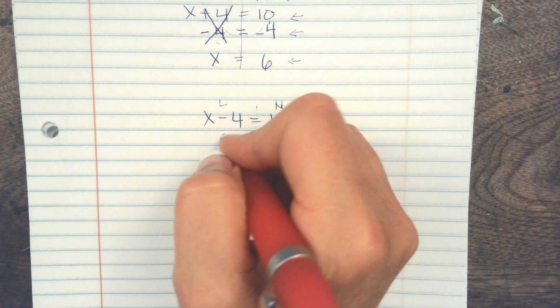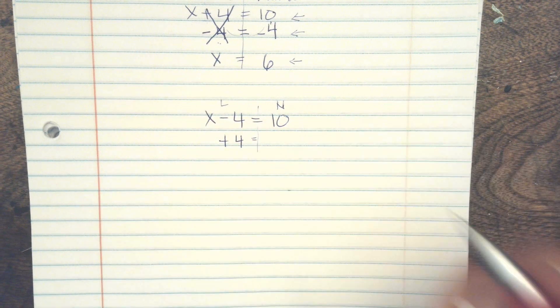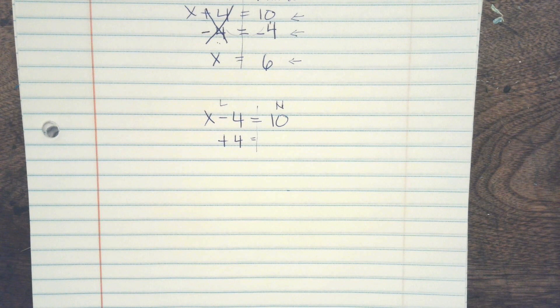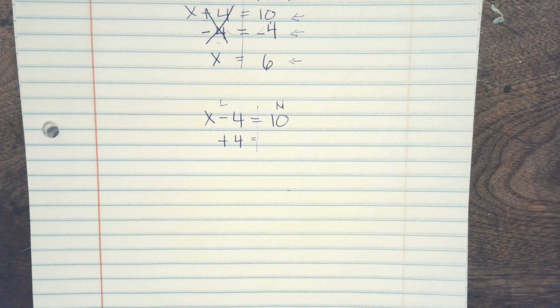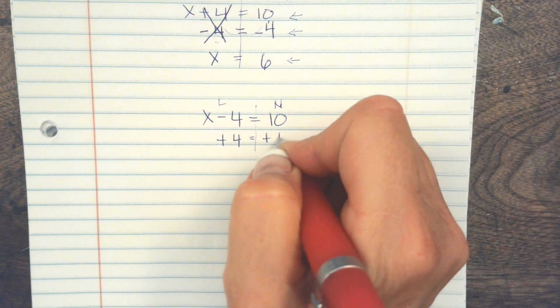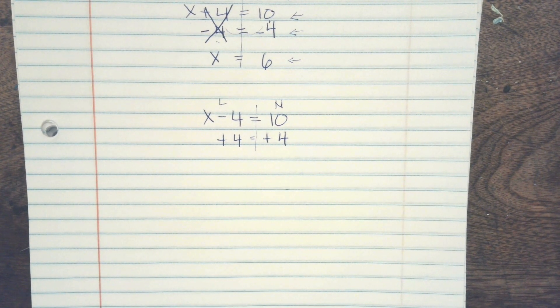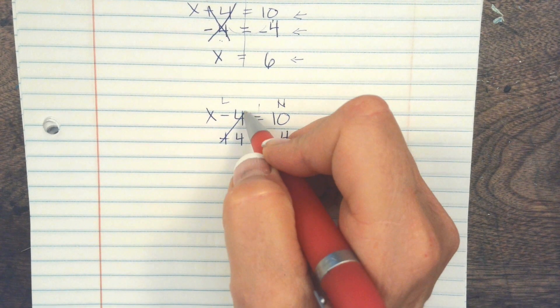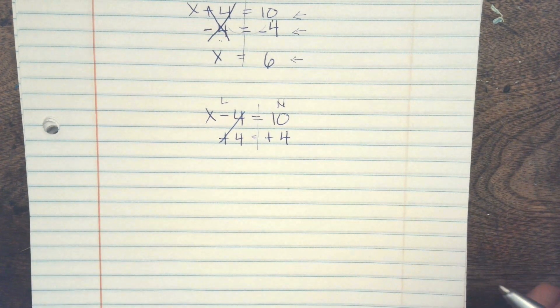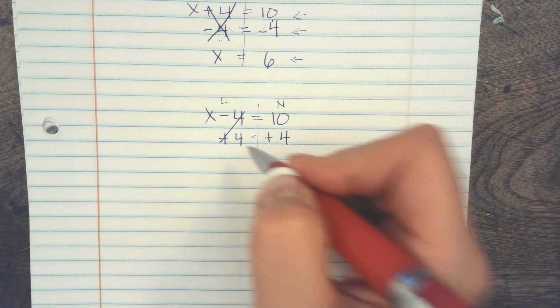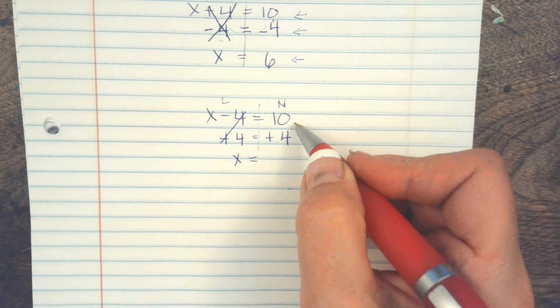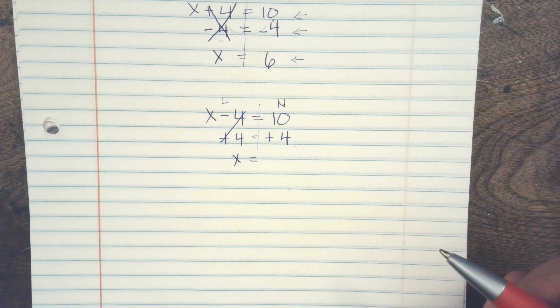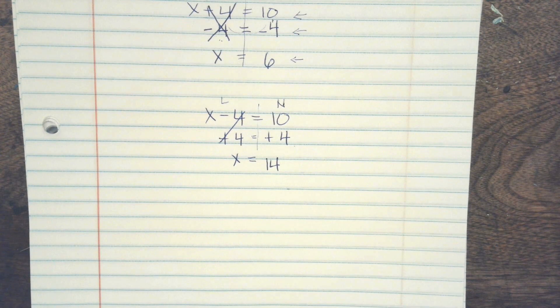Add. And then my other rule is whatever I do to one side of the equation and the equal sign, I have to do to the other side. So I'm going to add 4 on this side. The next step is to cross out the numbers. What's left on this side is x and then we solve 10 plus 4. So x equals 14.